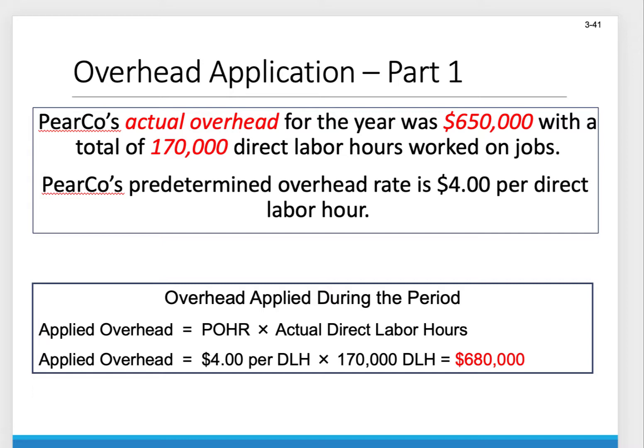Let's use Pair Company as an example. Pair Company has actual overhead of $165,000, with a total of $175,000 direct labor hours worked on the jobs. So we now have what actually happened. We previously calculated a predetermined overhead rate of $4 per direct labor hour — that's what we're applying, $4 per direct labor hour. So we have to compare what actually incurred versus what we applied.